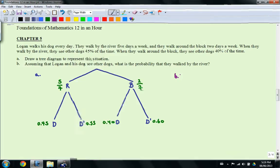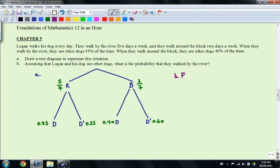Now part B, what you're looking for is you're looking for the probability that they are walking by the river given that they saw a dog. So if you look on the probability formula worksheet there, this is actually going to be equal to probability of R and D divided by the probability of D. So how do we calculate that? Well, the probability of R and D is actually this right here.